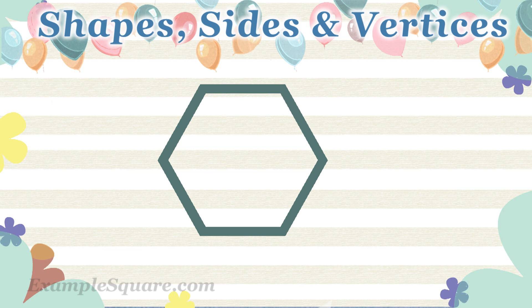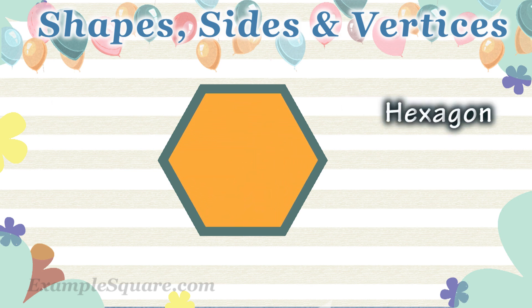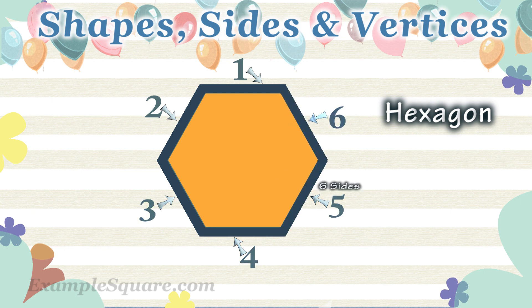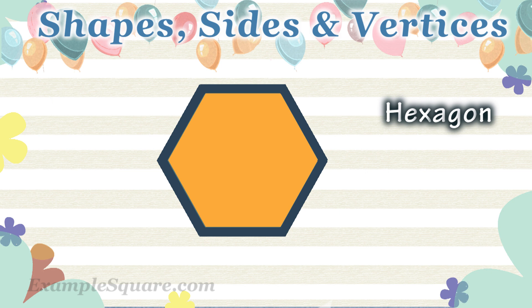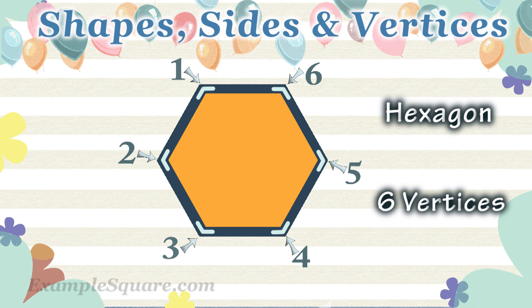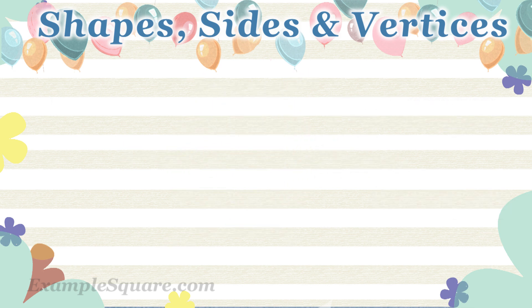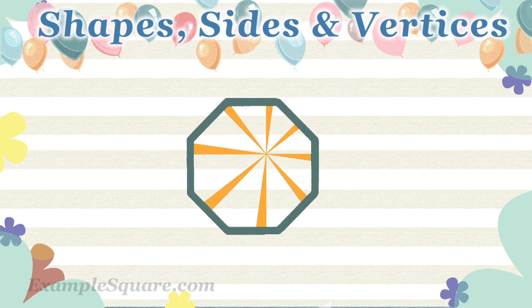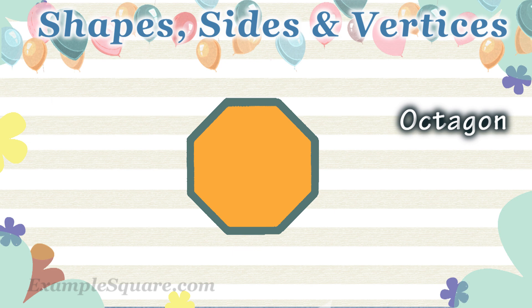What shape is that? Octagon. How many sides does an octagon have? An octagon has 8 sides.